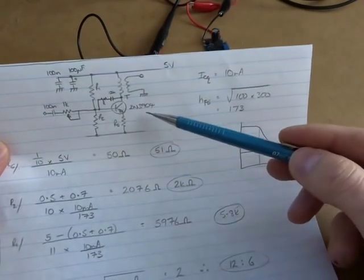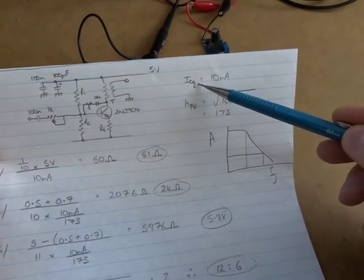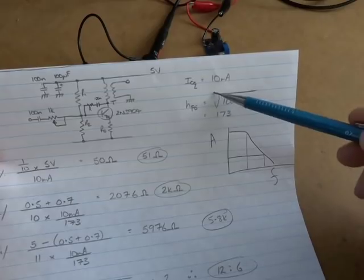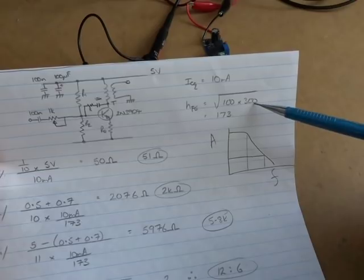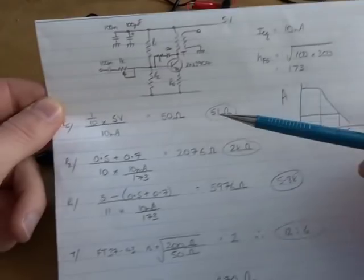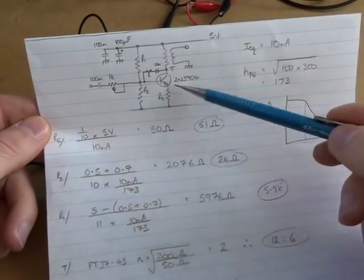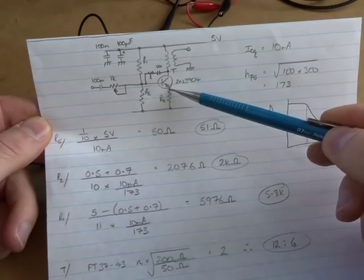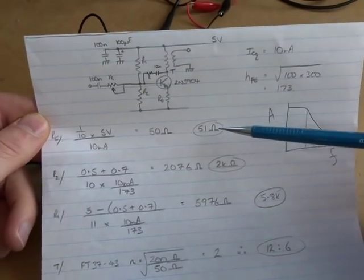No real difference there. 2N3904, so setting the quiescent DC current at 10 milliamps, and then finding an hFE from the spec sheet, again using that geometric mean approach. So the square root of the minimum value in the spec sheet times the maximum value in the spreadsheet for 10 milliamps comes out at 173. This is just using that value there for the various numbers. So for the emitter resistor, again setting up that emitter to be a tenth of VCC, so 0.5, and then divided by 10 milliamps comes out to be 50 ohms. So we'll use a 51 ohm resistor there, nice and easy.